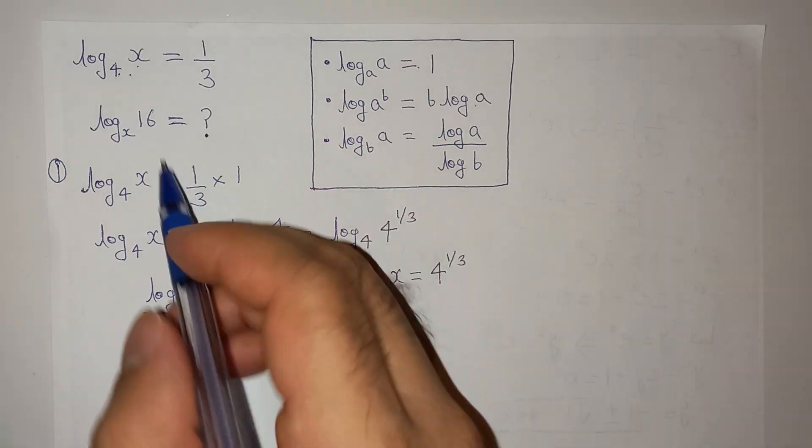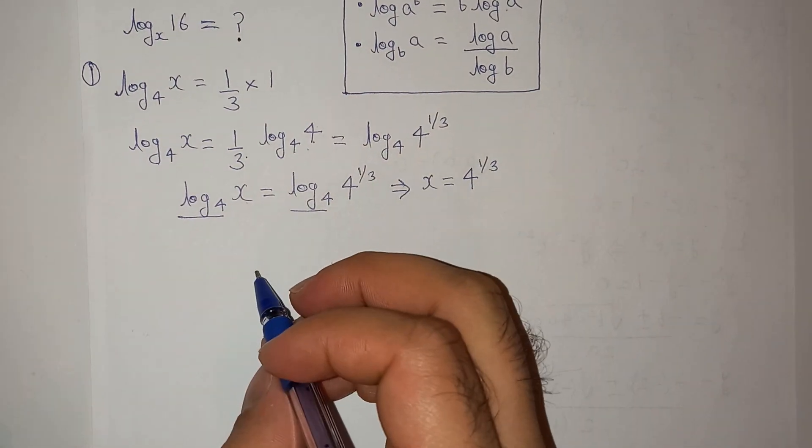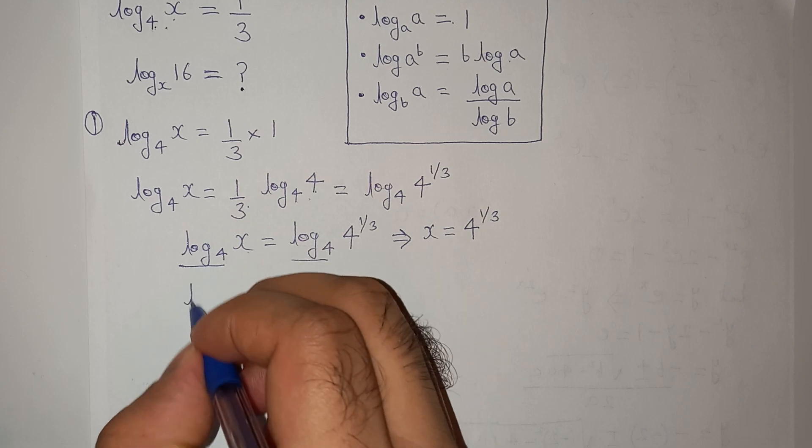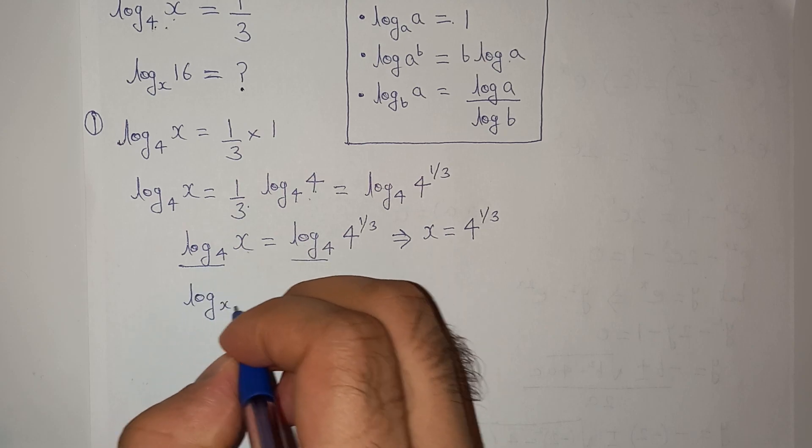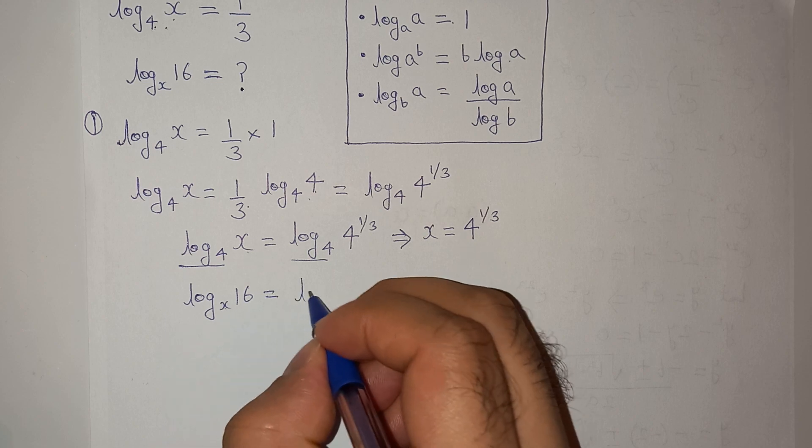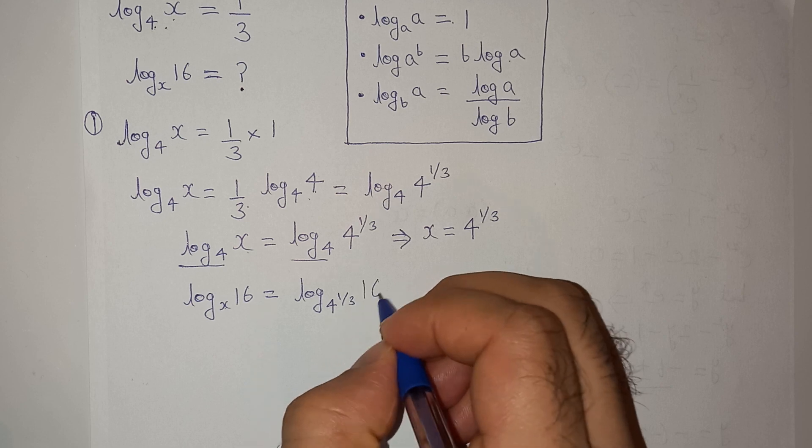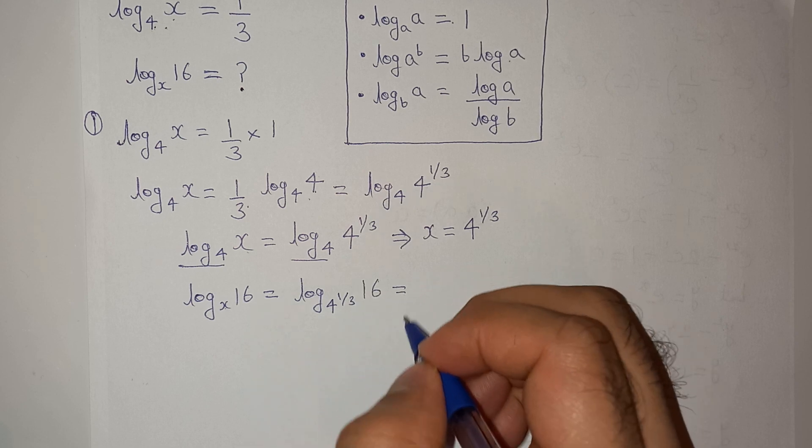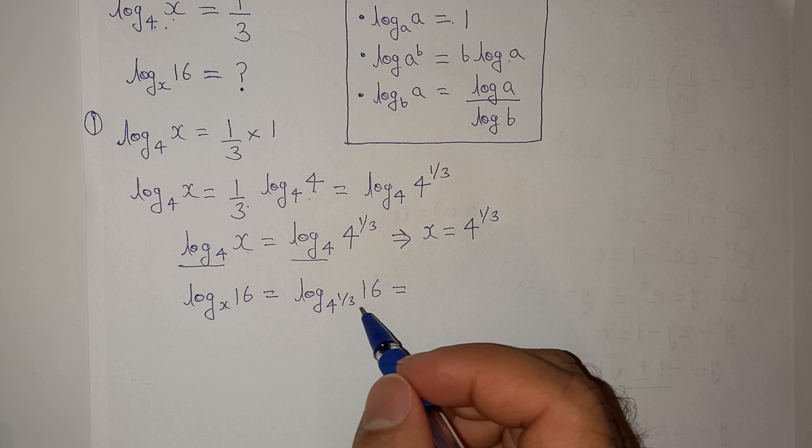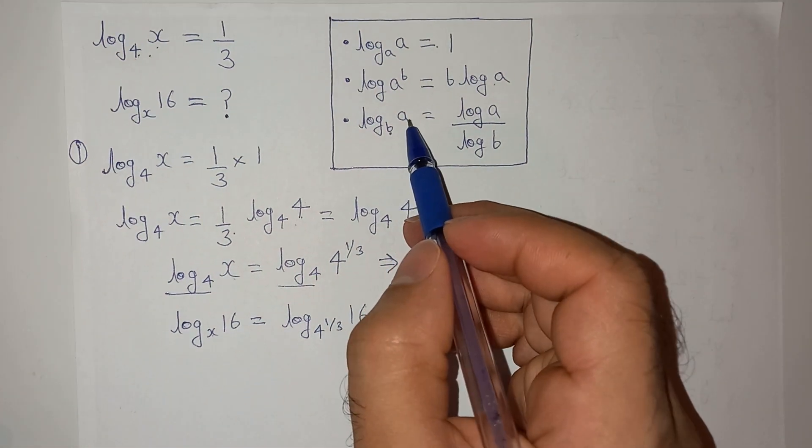I hope it is clear. We have to find the value of log_x(16). The value of x is 4^(1/3), so we need log_(4^(1/3))(16).